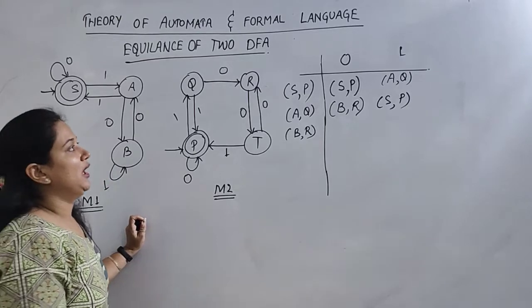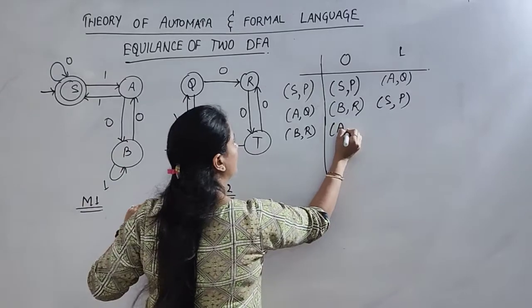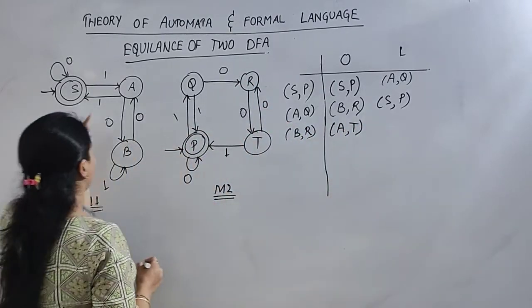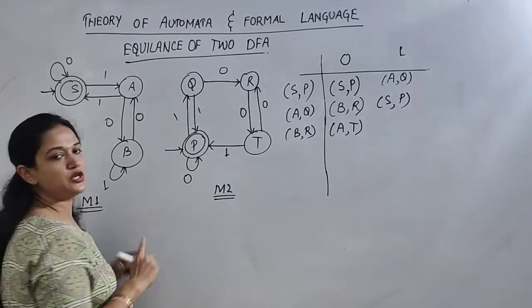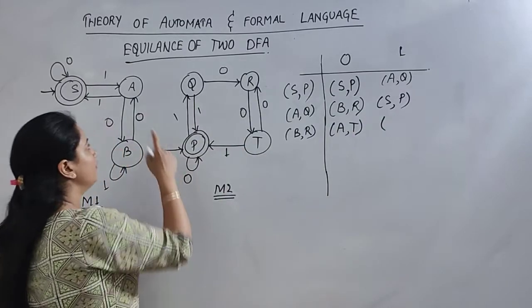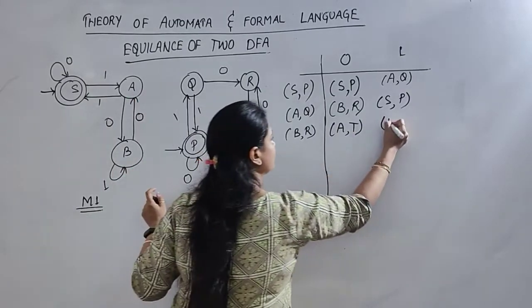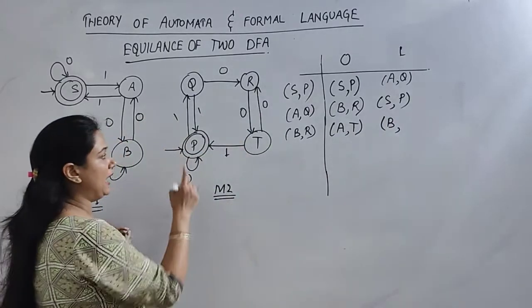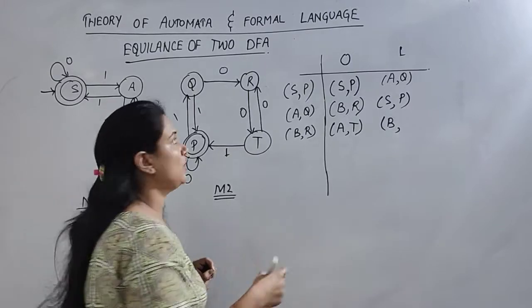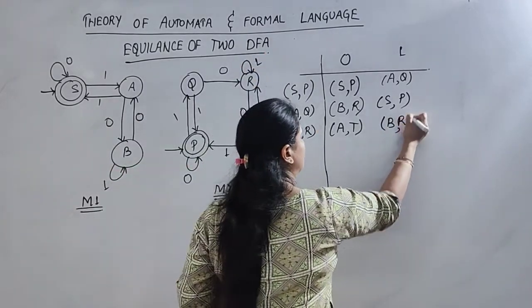B, R on zero input. So B on zero input is A, and R on zero input is T. A and T, both are non-final, again they are compatible pair. Next we will check one input. So B on one input is B, and R on one input, R is nothing, I think R is missing over there, might be a loop. So it is a loop. So B, R is already checked and both are non-final states.